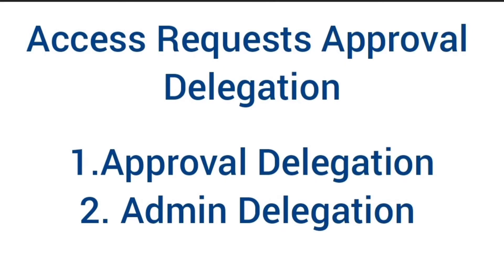This approver delegation can be done in two ways in GRC Access Control. The first one is where the approver himself can delegate the authority of approval to another person. The second way is admin delegation, where the system admin delegates the approver rights of one approver to another approver for a certain period of time. We will see both options in detail.